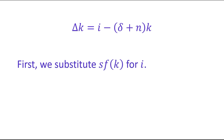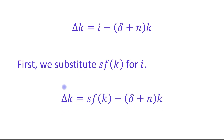First we substitute savings for investment. We can write the equation in this form: change in capital stock per worker equals S times F(K) — where S is the saving rate and F(K) is the production function — minus the breakeven investment.